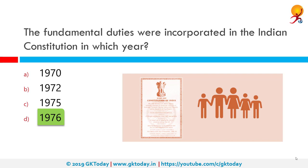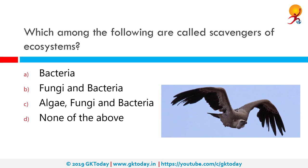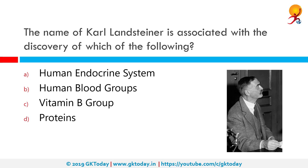Which among the following are called scavengers of the ecosystem? The correct answer is fungi and bacteria. Scavengers play an important role in the food web — they keep the ecosystem free of bodies of dead animals. Scavengers break down organic material and recycle it into the ecosystem as nutrients. The name of Karl Landsteiner is associated with the discovery of which of the following? The correct answer is human blood groups. Karl Landsteiner was an Austrian biologist, physician and immunologist who distinguished the main blood groups in 1900, developing the modern system of classification from his identification of agglutinins in the blood, and identified the Rhesus factor with Alexander Wiener in 1937.